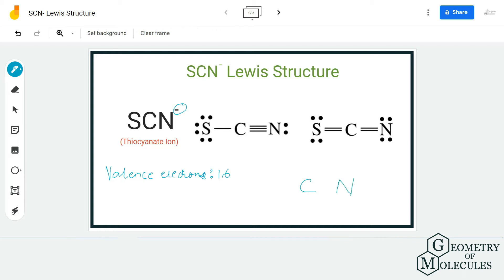Carbon will take the central position and the sulfur and nitrogen atoms will be placed like this. Once you have done that you can start putting pairs of electrons between them to show a bond. After that you will come across these two possibilities and to check which one is more preferable you have to find out the formal charges of all the atoms.